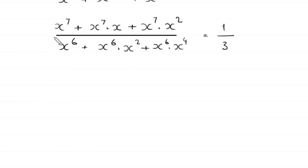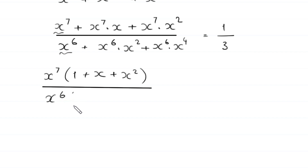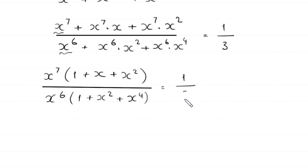Now, from the numerator we can factor out x to the power 7 as a common factor, and in the bracket we are left with 1 plus x plus x squared, divided by from the denominator we can factor out x to the power 6 as a common factor, and in the bracket we are left with 1 plus x squared plus x to the power 4, is equal to 1 over 3.